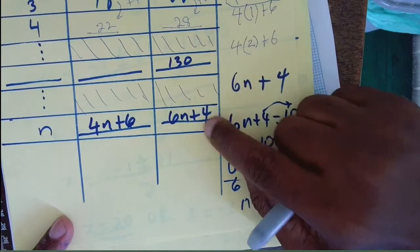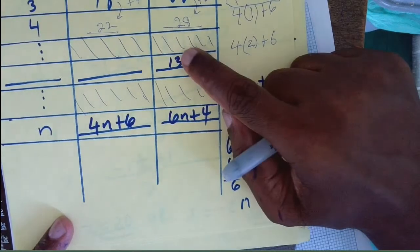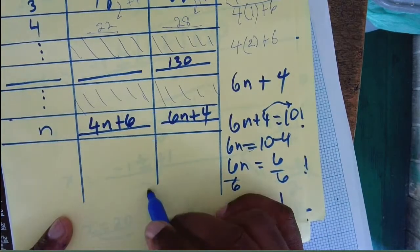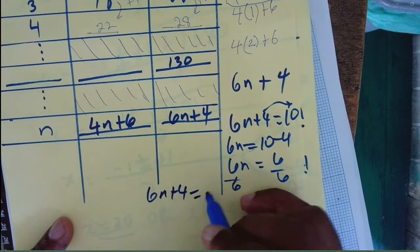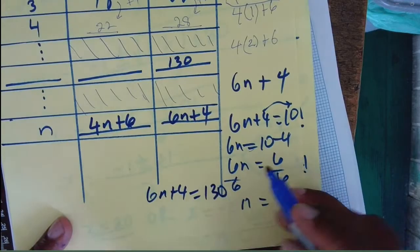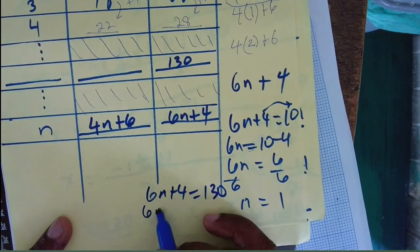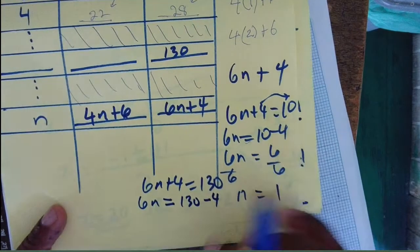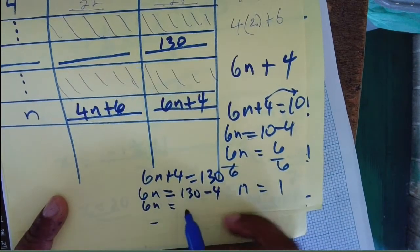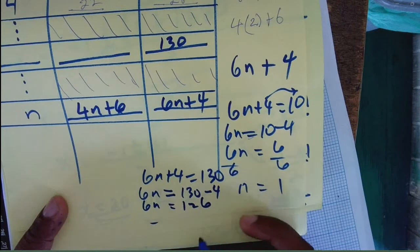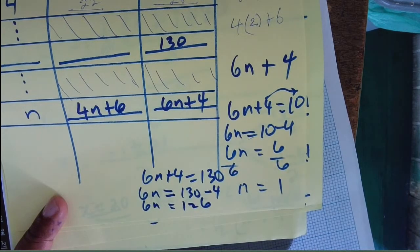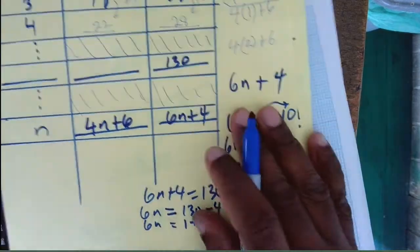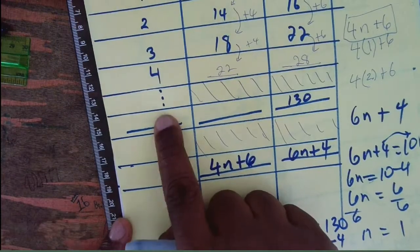Now, when 6n + 4 equals 130, what do we get? 6n + 4 = 130. Subtract 4: 6n = 126. Divide by 6: n = 21.